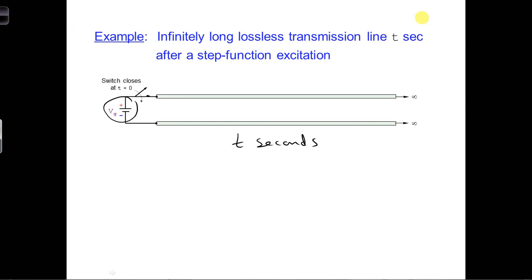To draw the voltage along the transmission line, it helps if we define where Z equals zero is located. Where is our origin, our coordinate system origin?